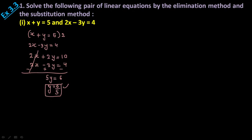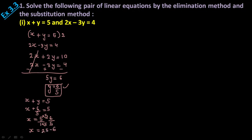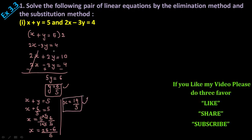Now you need to find out the value of x. Keep this value of y in any of the equations — let me keep it in the first one. So x + y = 5; on the place of y I am going to put 6/5. Take it to the other side: x = 5 - 6/5. I need to take the LCM — multiply by 5/5 — so you get x = (25 - 6)/5 = 19/5. So x = 19/5 and y = 6/5. This is by the elimination method.